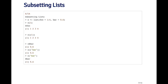If I use the double bracket — x double bracket one — what I get back is just the sequence one through four. So the difference here is that in the first example I got a list that contained the sequence one through four, and in the second example I got just the sequence. That's the difference between the single bracket and the double bracket operator.